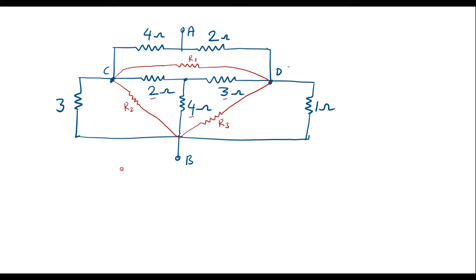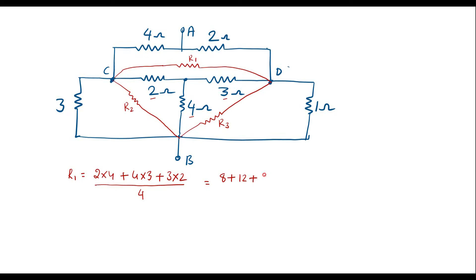R1 can be calculated as the product of adjacent resistors divided by the opposite resistor. That is R1 = (2×4 + 4×3 + 3×2) / 4 = (8 + 12 + 6) / 4 = 26 / 4 = 6.5 ohm. So the value of R1 is 6.5 ohm.